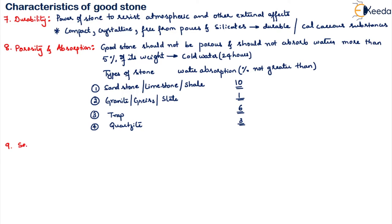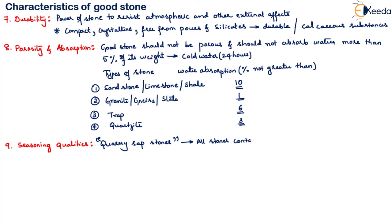The ninth property is seasoning qualities. All stones contain a certain amount of moisture, known as quarry sap. A period of 3 to 6 months of seasoning is generally enough for the stone to come into usable conditions after they have been quarried.